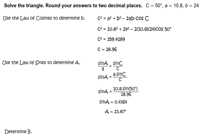Lastly, determine the measure of angle B. Write: the measure of angle B equals 180 degrees minus the measure of angle A minus the measure of angle C, or approximately 180 degrees minus 25 and 87 hundredths degrees minus 50 degrees, which equals 104 and 13 hundredths degrees.